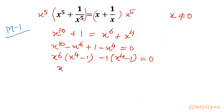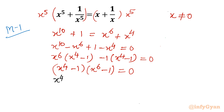So overall x power 4 minus 1 is a common factor. In the second bracket I can write x power 6 minus 1 equal to 0. Using algebra and algebraic identities we can solve both equations. So f times g equal to 0, meaning x power 4 minus 1 equal to 0.